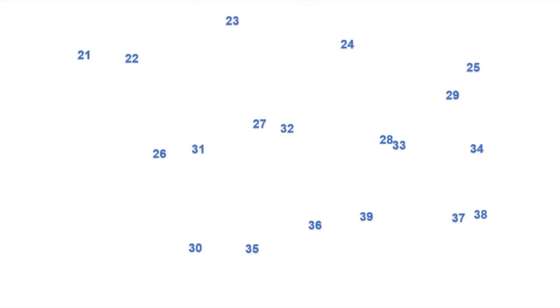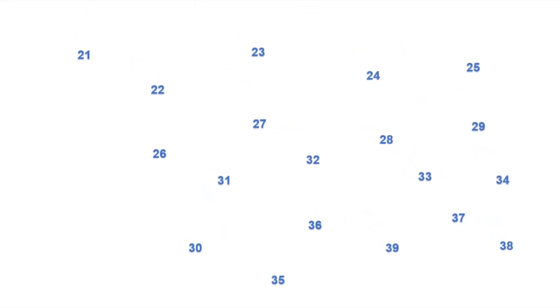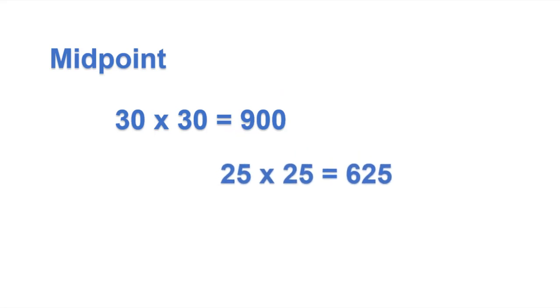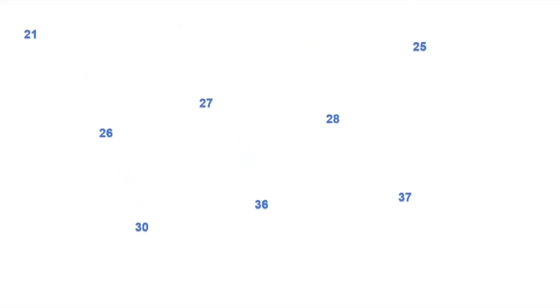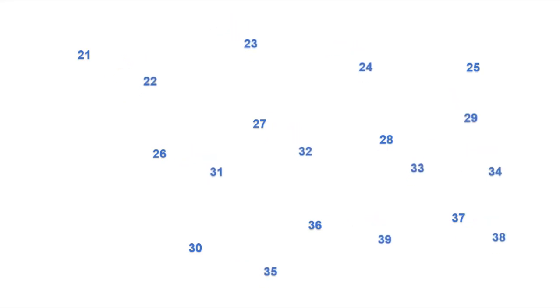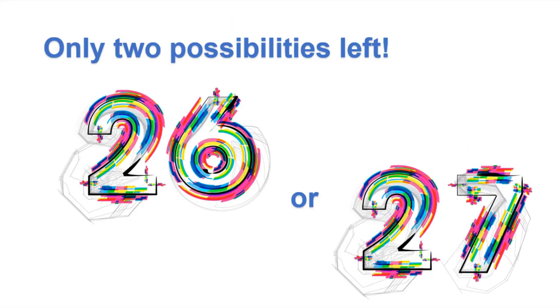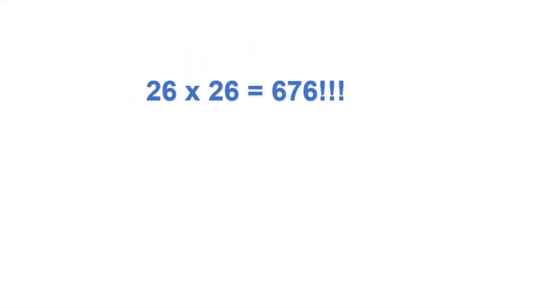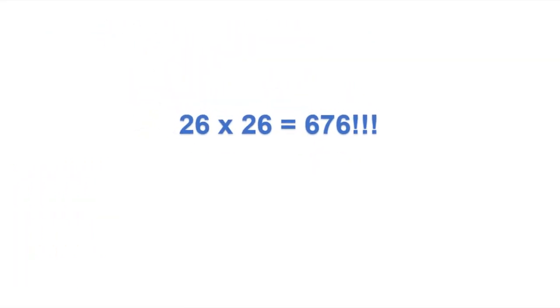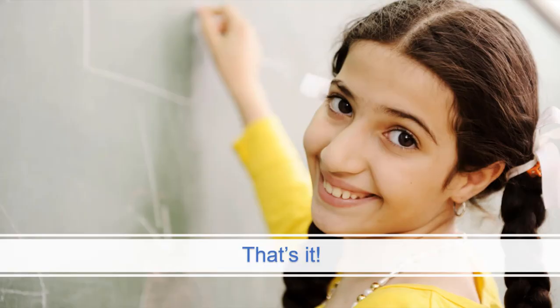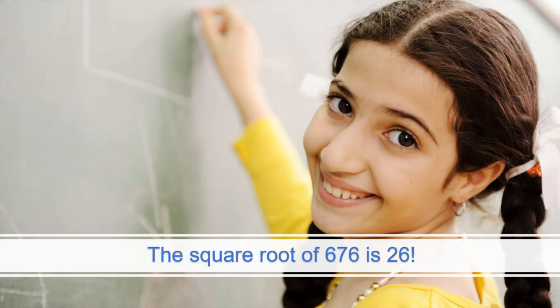Oh, I see where this is going. How about 25? 25 times 25 equals 625. Wow, that's awfully close. Only two possibilities left. It has to be 26 or 27. I'm getting warmer. Let's try 26 first. The square root of 676 is 26. And you only had to do three calculations by hand.